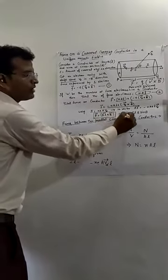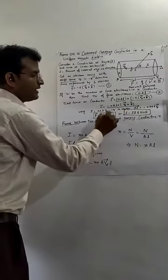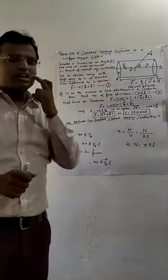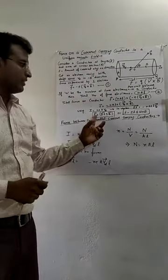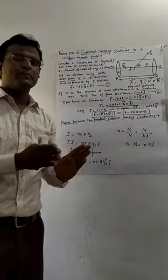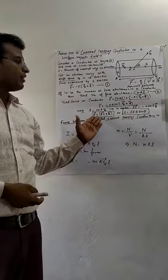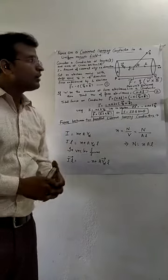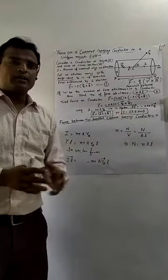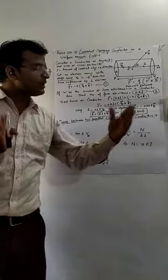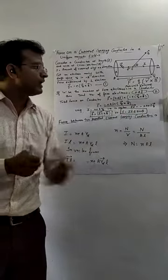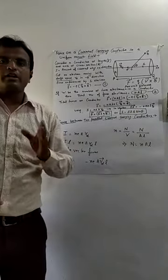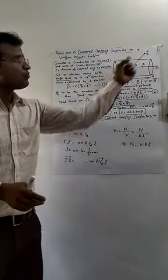The formula for force acting on a current-carrying conductor placed in a magnetic field is F = iL × B, or equivalently F = iLB sinθ. Here, I is the current, L is the length of the conductor, B is the strength of the magnetic field, and θ is the angle between the direction of current and the direction of the magnetic field.